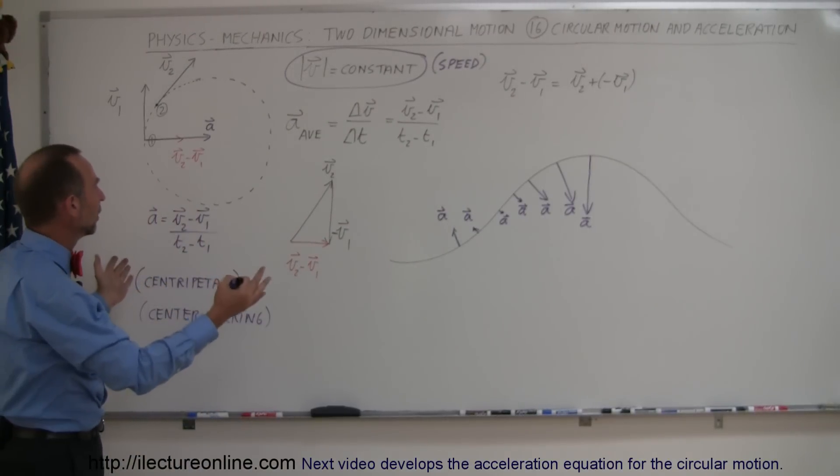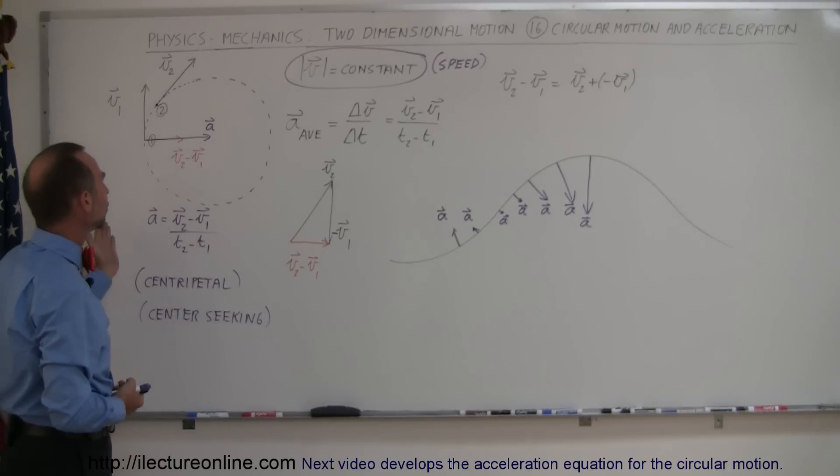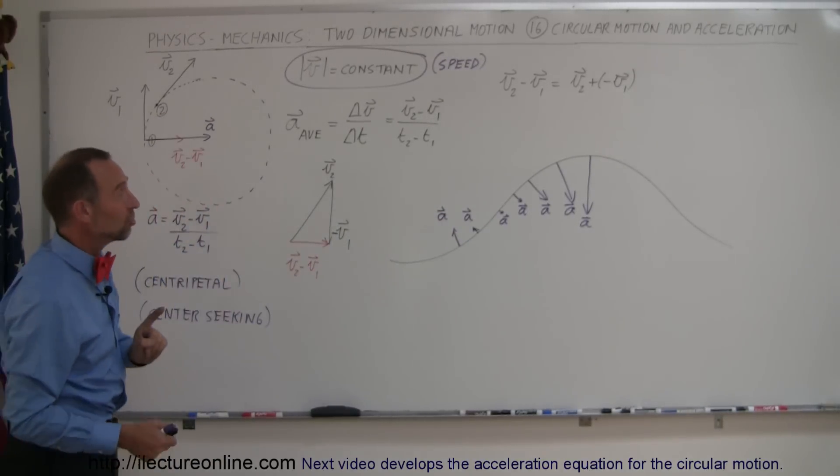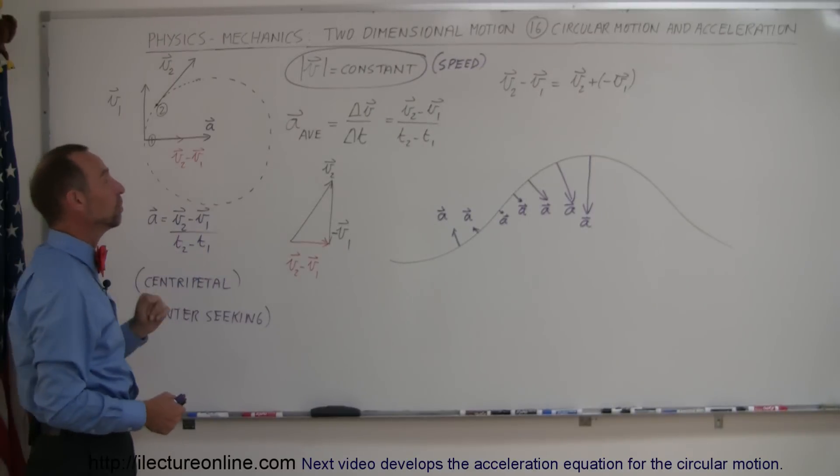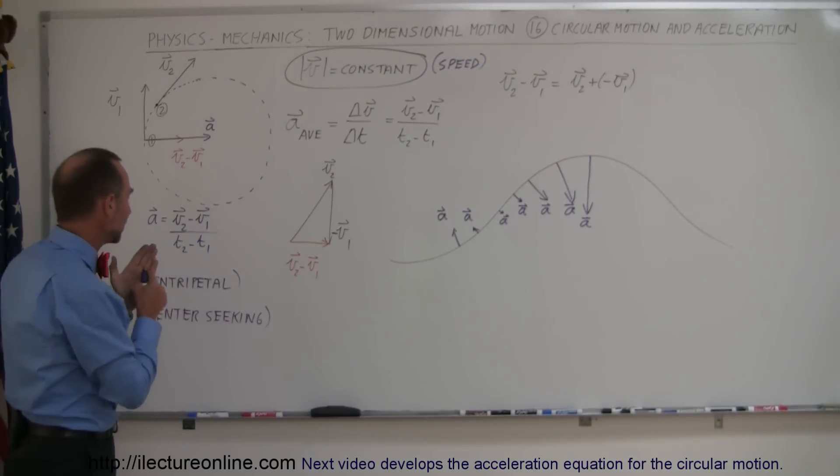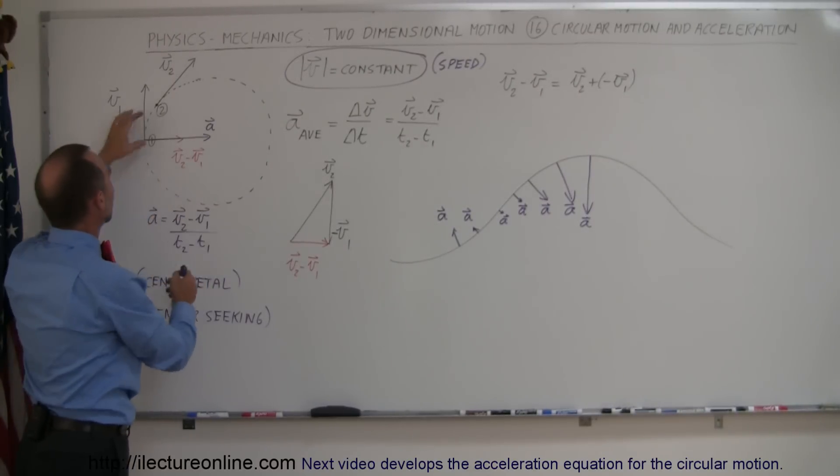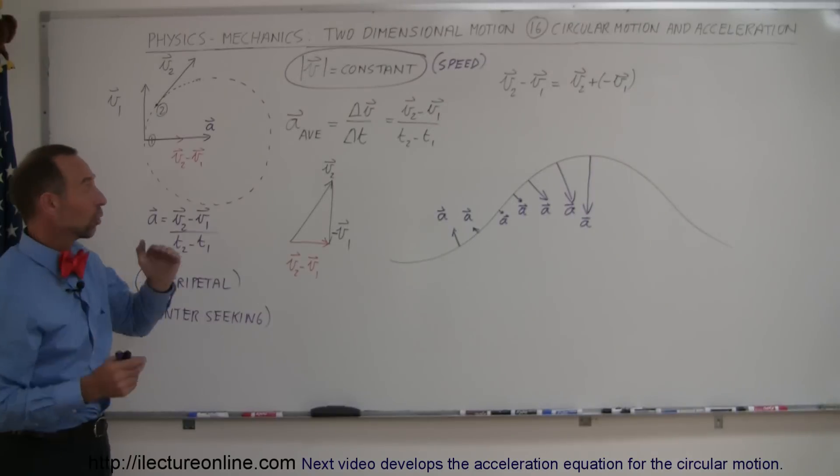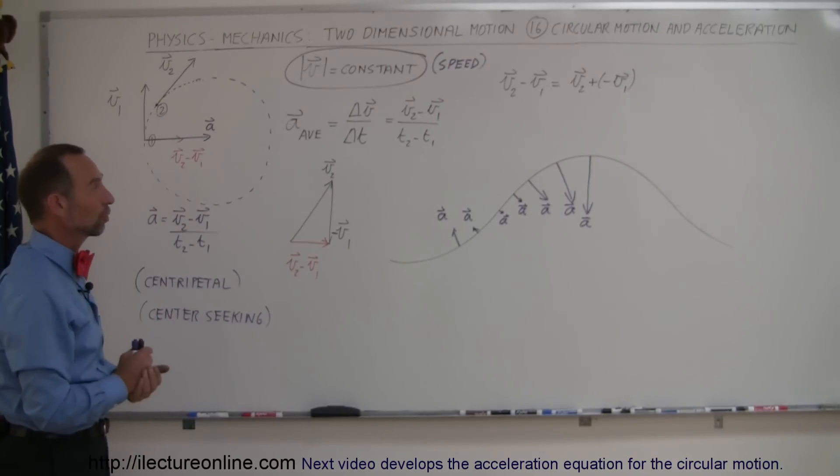So here is simply a definition, an understanding, that whenever you go around a circular path, or along a curved path, there will be an acceleration, even in the absence of a change in speed, and that acceleration can be defined by the change in the vectors between two different locations, the velocity vectors divided by the time it took to go from one to the other, and of course the direction is always perpendicular to the curvature. All right, and that's how you do that.